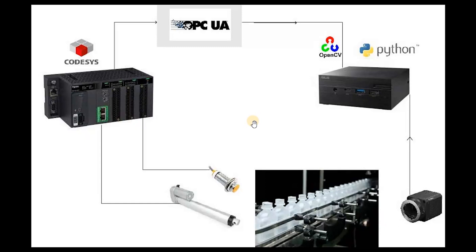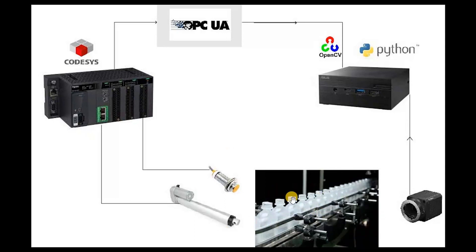What is this project about? It's a bottle labeling quality control system. In some chemical factories, it's really important to have a label on every single bottle, and if a bottle does not have a label, it should be immediately rejected — because some of these bottles could contain the expiration date, instructions, and it's vital to have them on every bottle. So we're going to create a small program that checks the label on every bottle: if there is a label, let the bottle pass; otherwise, reject it.